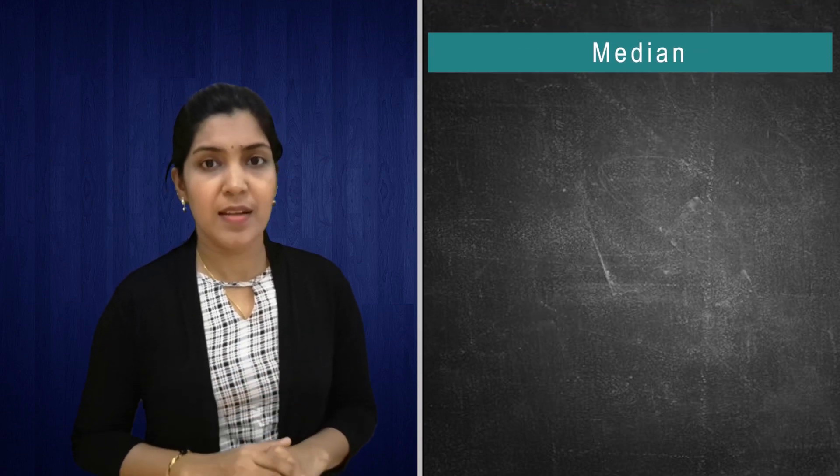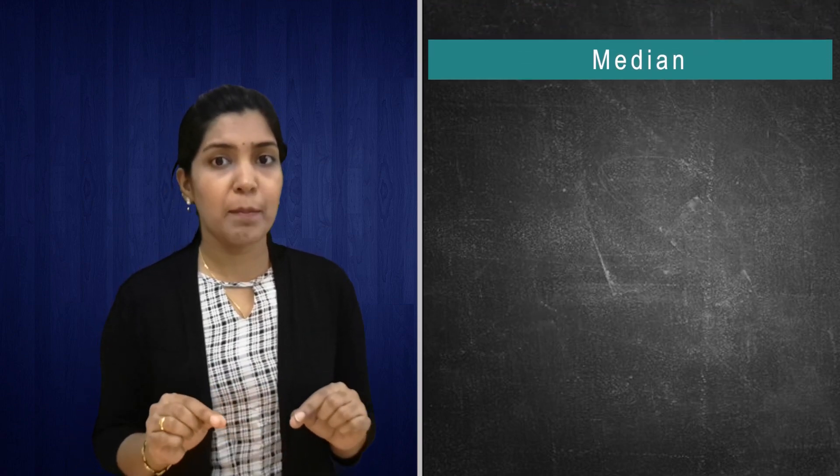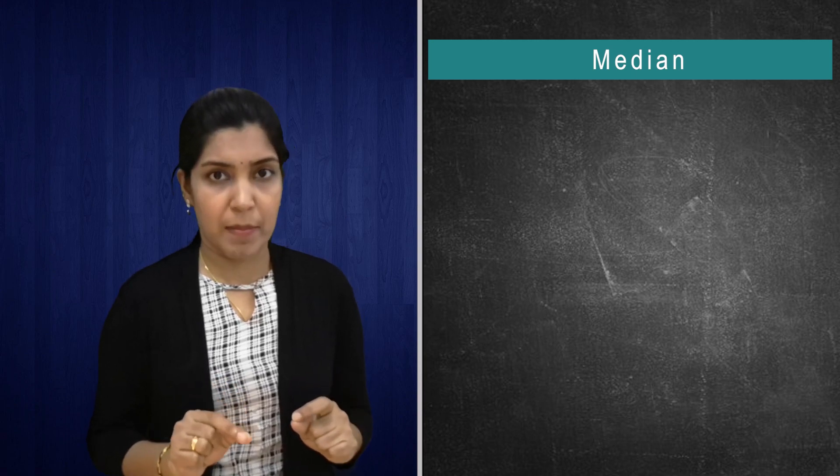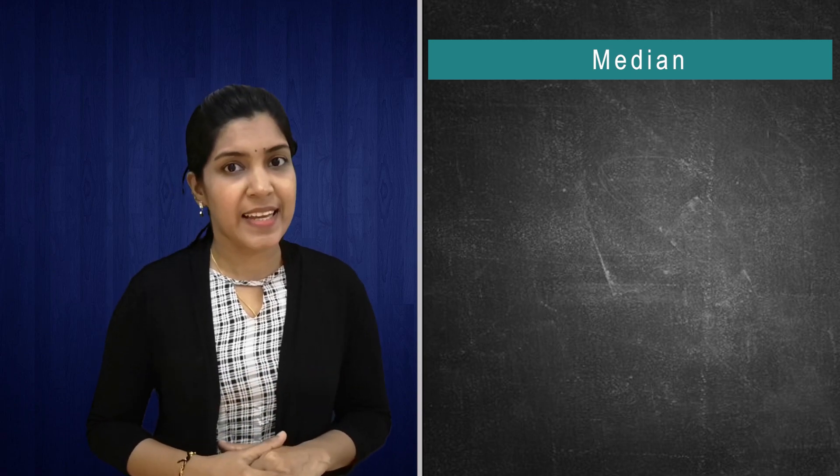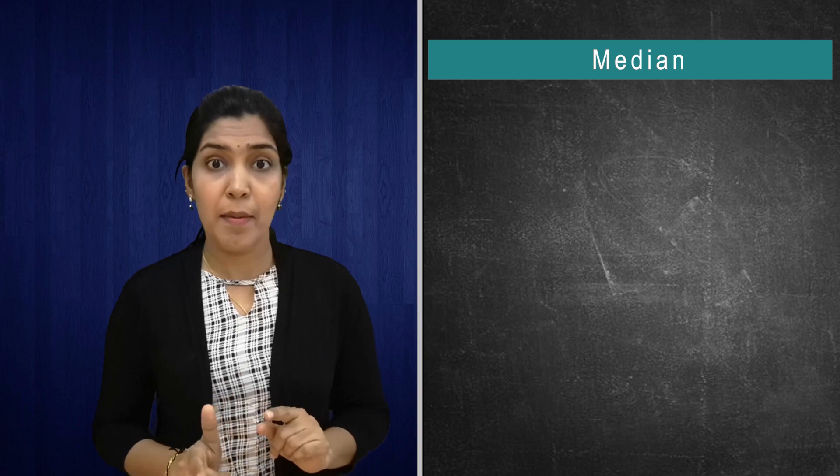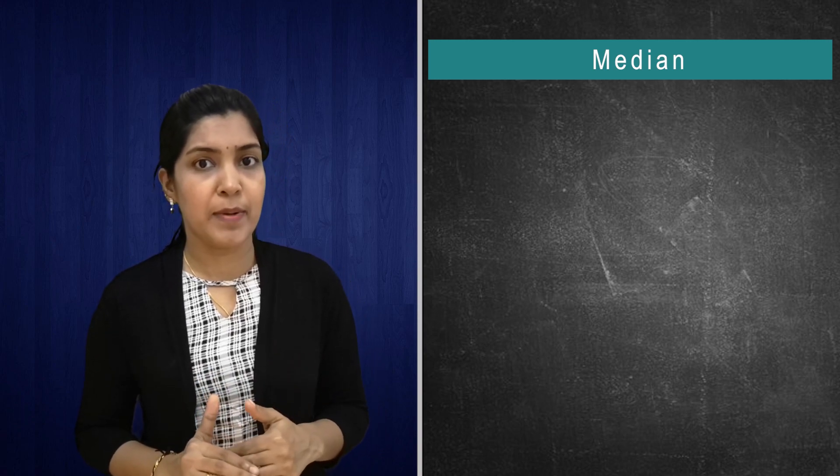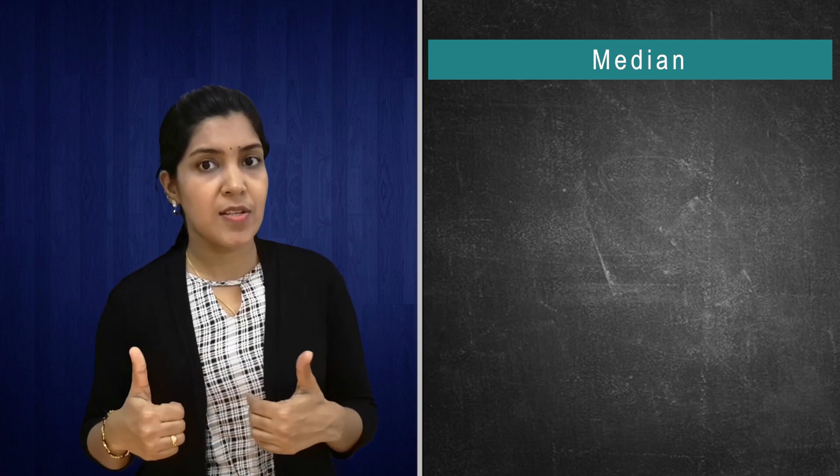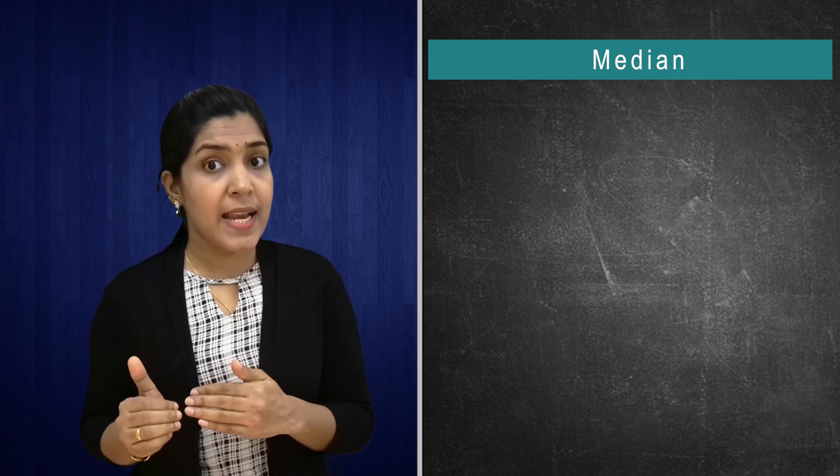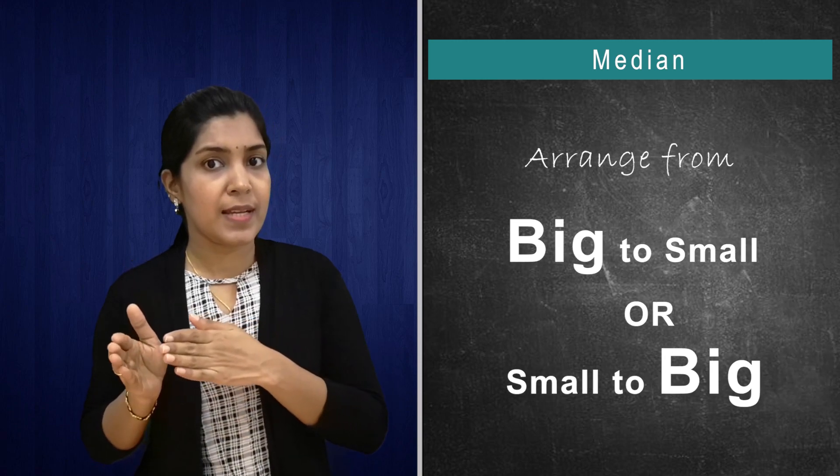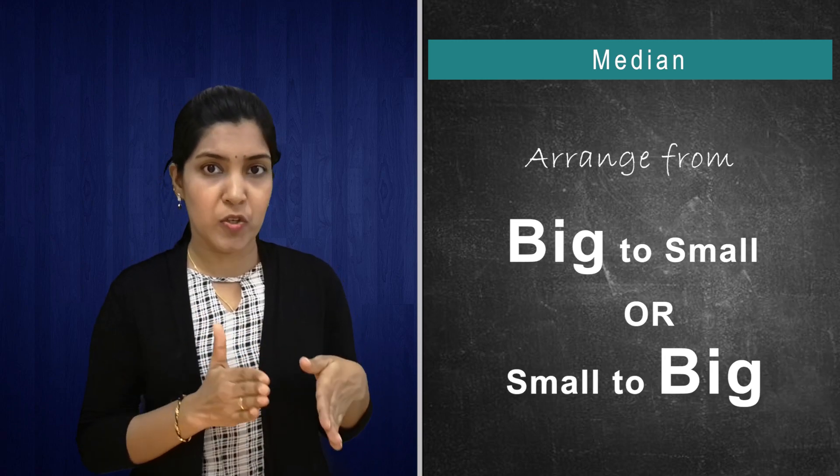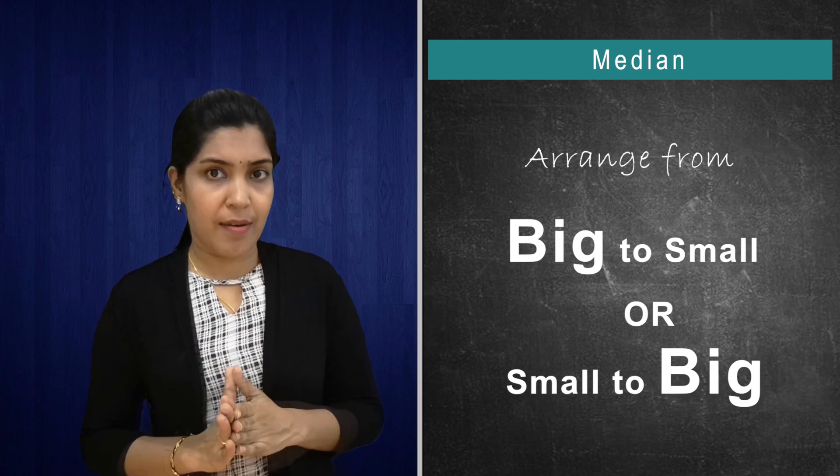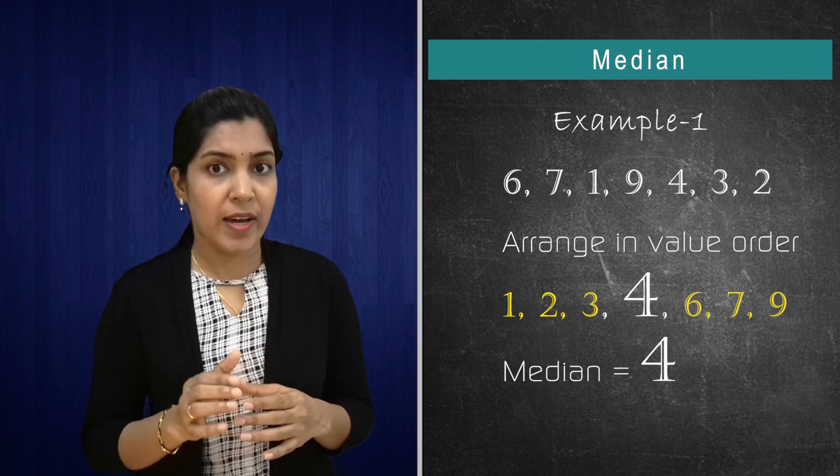The second one, median. Median is the middle number of the given sets of numbers. It is exactly like its sound. Median, middle. So first for finding the middle number or finding the median, you have to arrange the given sets of data in a particular order from small to big or big to small. In any order you can arrange. Then it is very easy to find the middle number.